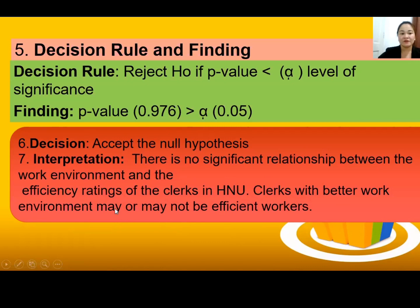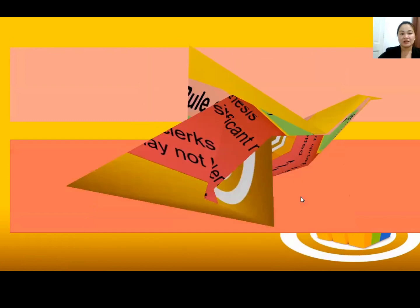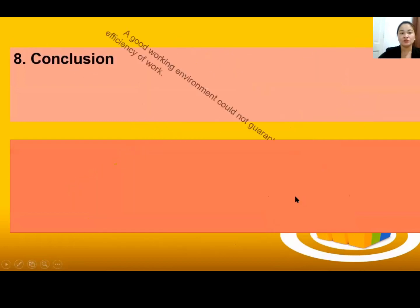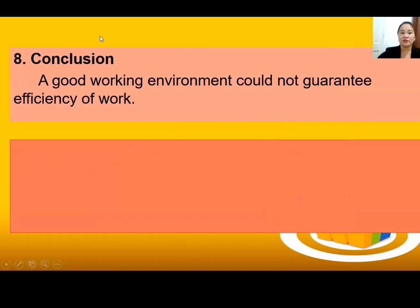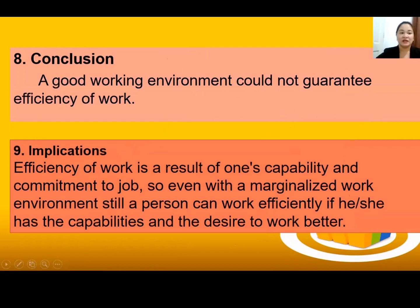Step 8 — Conclusion: A good working environment could not guarantee efficiency of work. Step 9 — Implication: Efficiency of work is a result of one's capability and commitment to the job. Even with a marginalized work environment, a person can work efficiently if he or she has the capabilities and desire to work better.